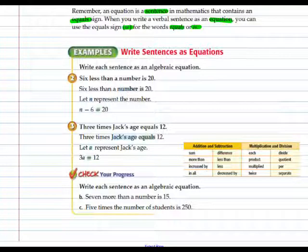In example 3, three times Jack's age equals 12. Let a represent Jack's age, so 3 times a equals 12.